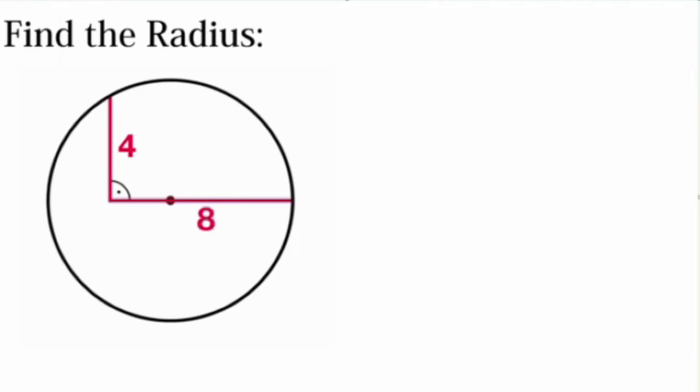Let's see what we're given. We're given that this line here from here to here is equal to 4, and then this line here is equal to 8. And then we are also given that these two lines together here make a right angle. This symbol signifies the right angle.